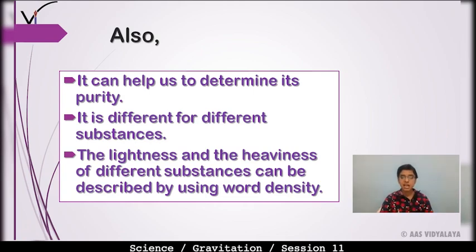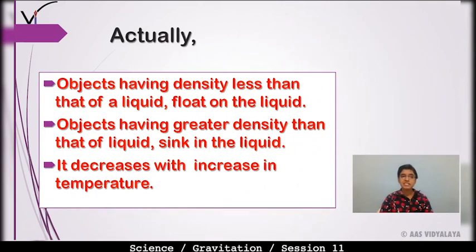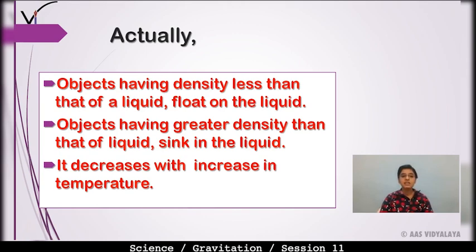Objects having density less than that of liquid float on the liquid. Koi bhi object jis ki density liquid se kam hai to woh liquid pe float karega. For example, clear water ek liquid hai — agar hum koi bhi paper ka piece uspe daal dete hain to woh water pe float karna start kar deta hai, kyunki paper ke piece ki jo density hoti hai woh water se kam hoti hai.